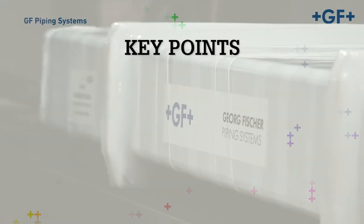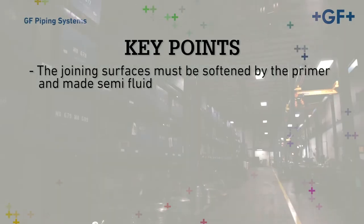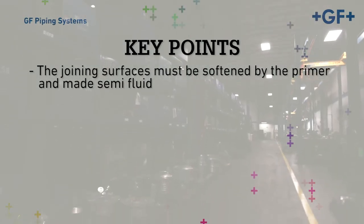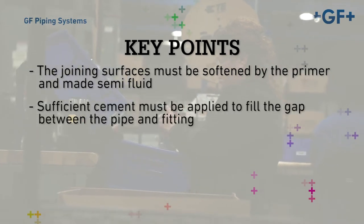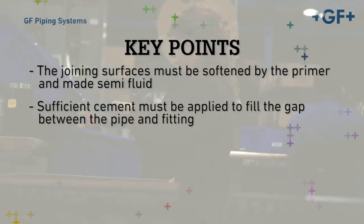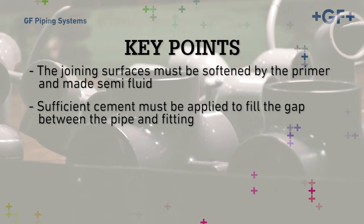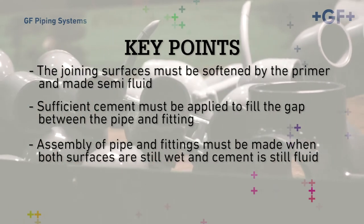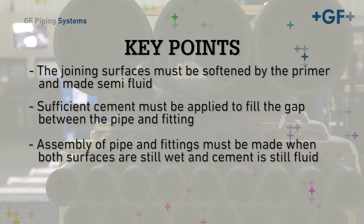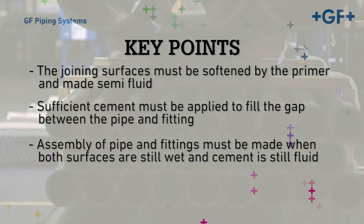Key points to remember are as follows. The joining surfaces must be amply softened by the primer and made semi-fluid. Sufficient solvent cement must be applied to fill the gap between the pipe and fittings. Assembly of the pipe and fitting must be made when both surfaces are still wet and solvent cement is still fluid.